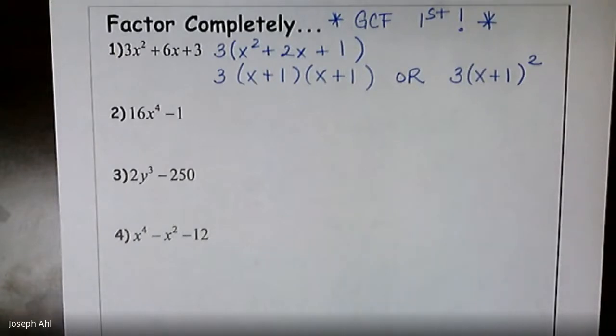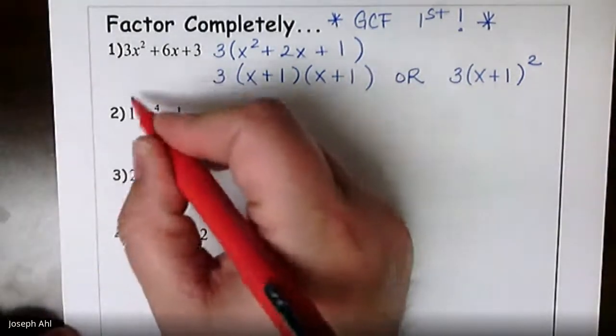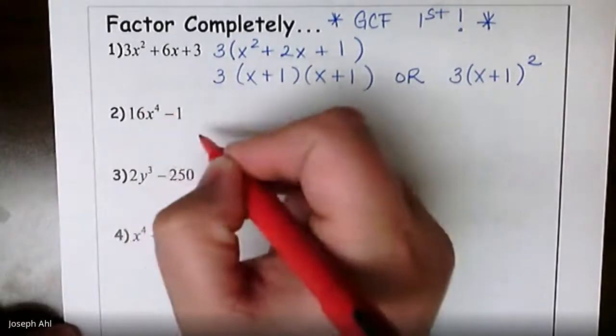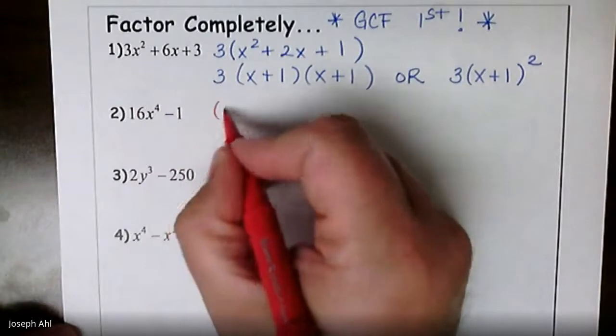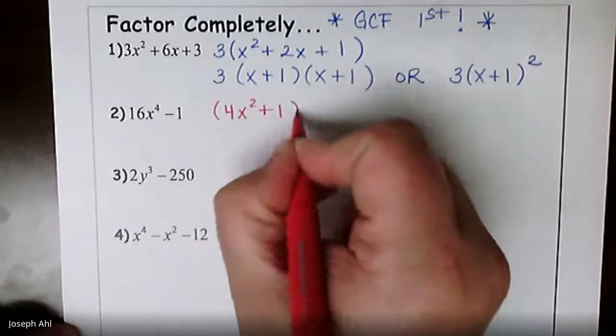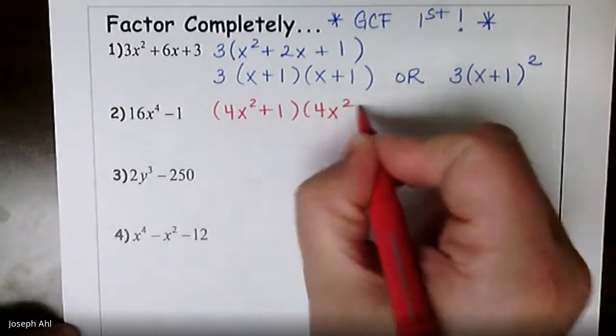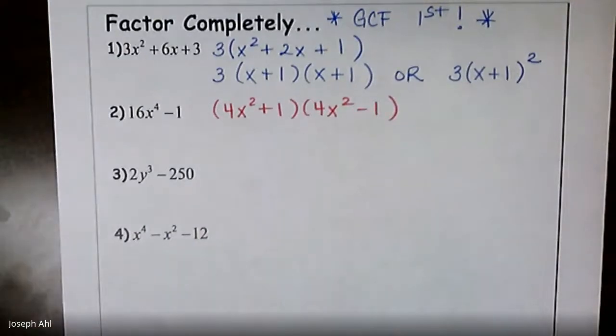All right, moving on to number two. Think GCF first, I'm looking at it, I don't see a GCF. One is not a very exciting GCF to take out. So let's move on and take a look at factoring with difference of perfect squares, maybe is what jumps out to you here. 16 is a perfect square, so is x to the fourth. So the first thing you would do is write this as, if I take the square root of each of these, 4x² + 1, and then 4x² - 1. So that would be a good initial stage to factor that expression.